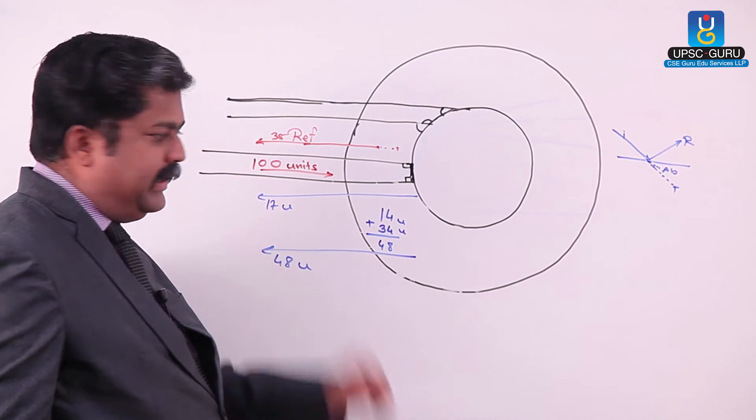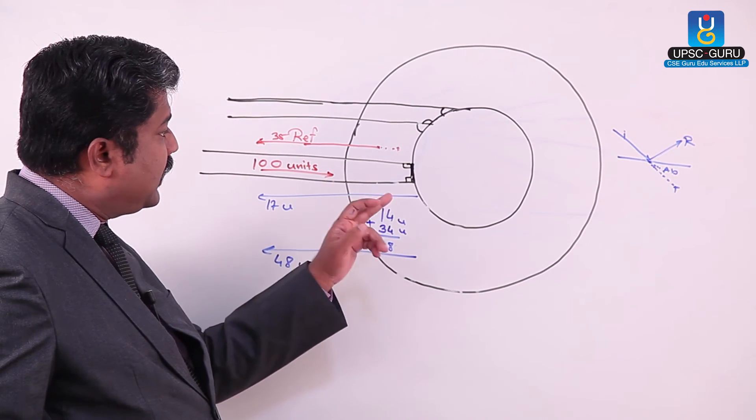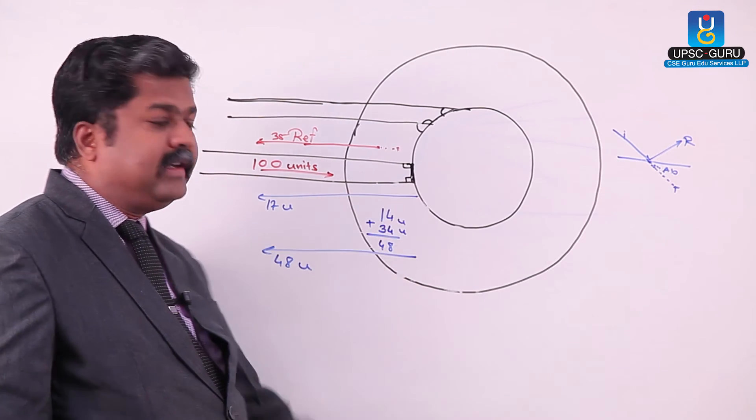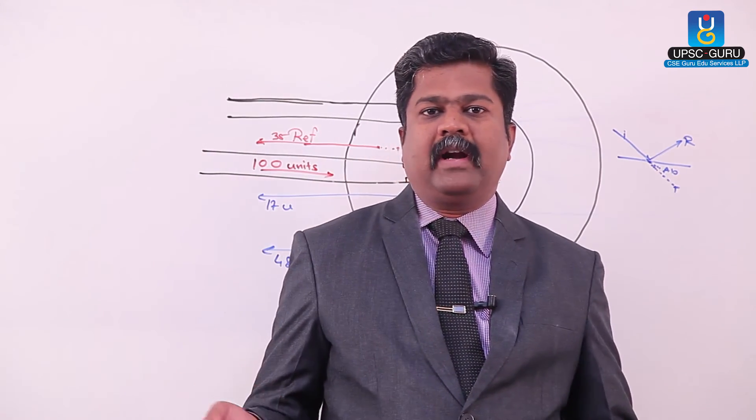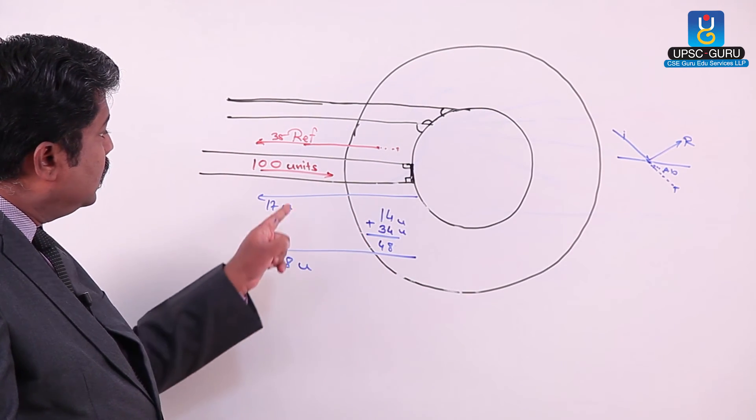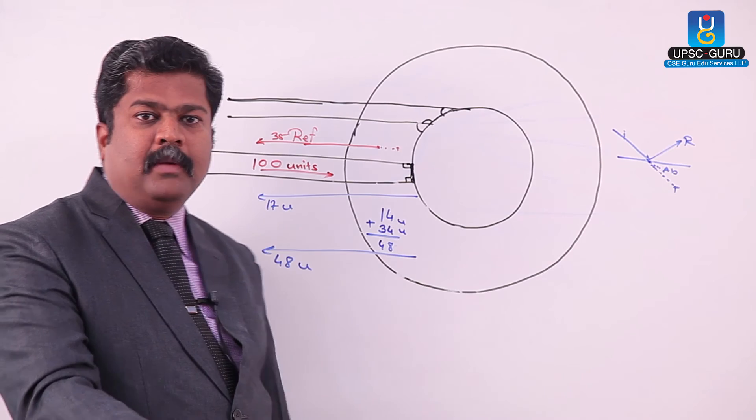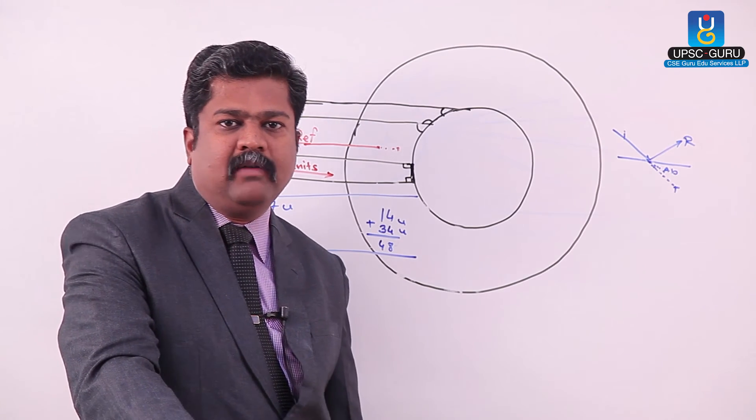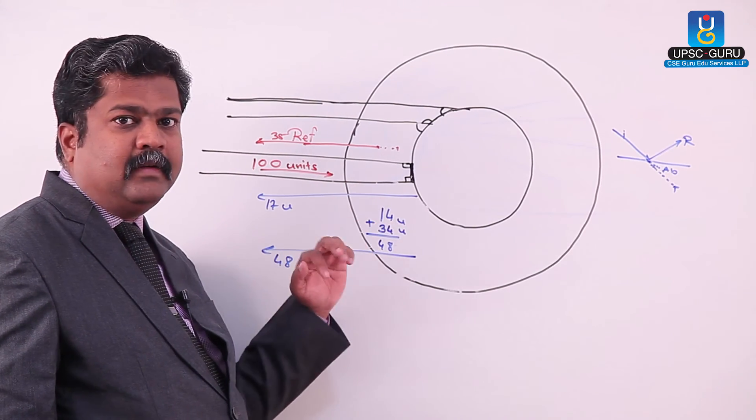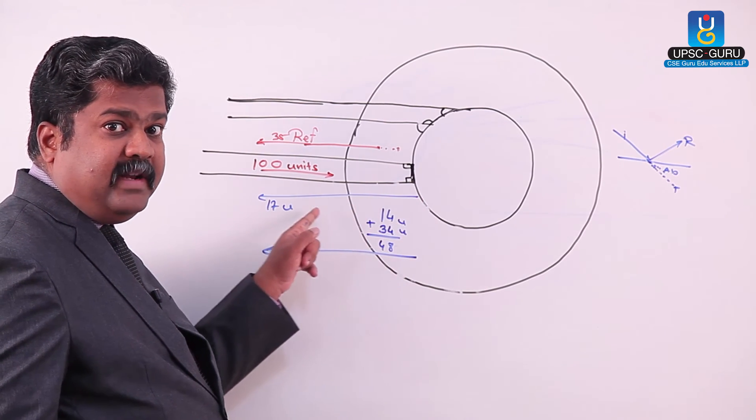Now, 14 units are absorbed by atmosphere. So, 35 plus 14, we are getting 49. So, 51 units are reaching on Earth's surface. They are either reflected or radiated back. The radiated back, 34 units are absorbed by atmosphere. Mainly because of carbon dioxide and water vapours. We are calling them as greenhouse gases. So, they retain this heat for a while. But, at the same time, radiated amount, 17% is going out.